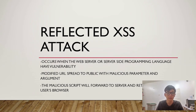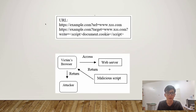The second type is Reflected XSS. This attack occurs when the web server or client-side programming language such as Java, PHP, or ASP.NET have vulnerabilities. The attacker uses a modified URL spread to the public with malicious parameters and arguments. The malicious script is forwarded to the server and returned back to the user's browser to execute.